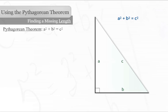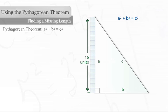Let us practice finding the hypotenuse when we know the lengths of the legs of a right triangle. In this example, side A is 16 units long, and side B is 12 units, but we do not know the length of the hypotenuse.